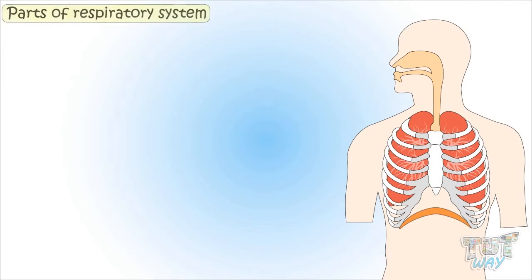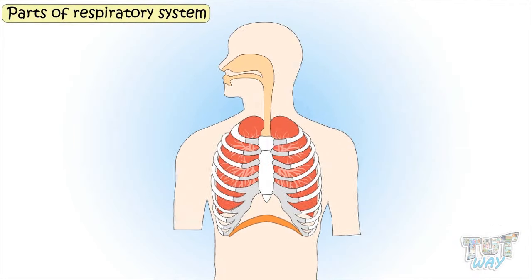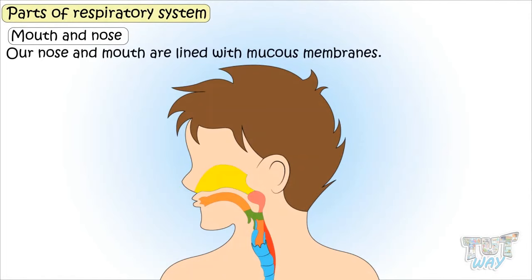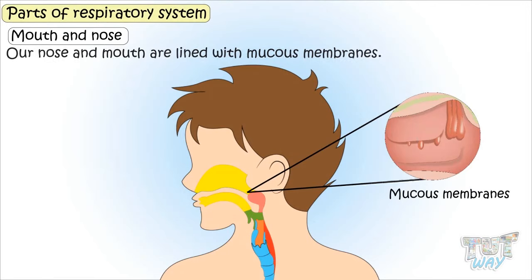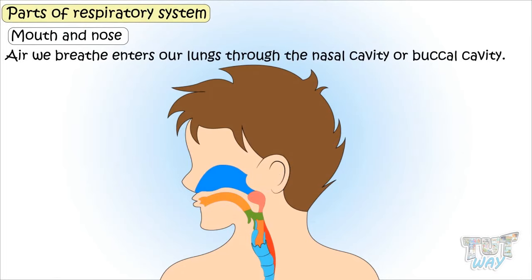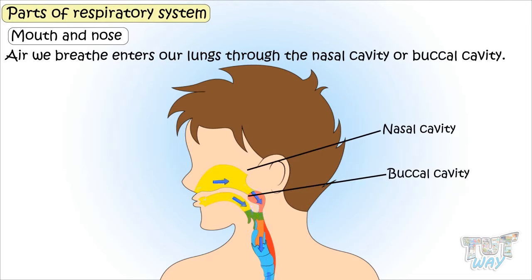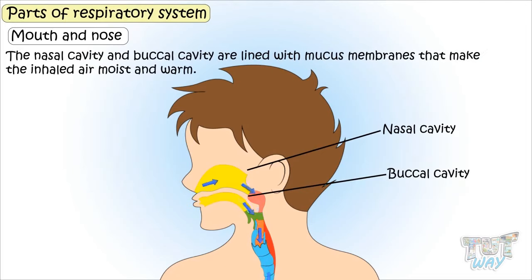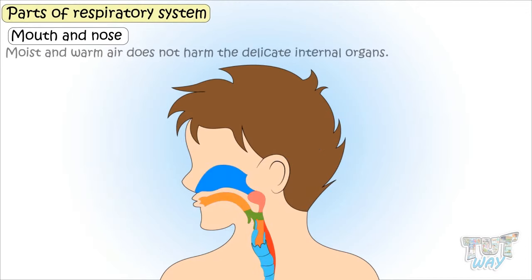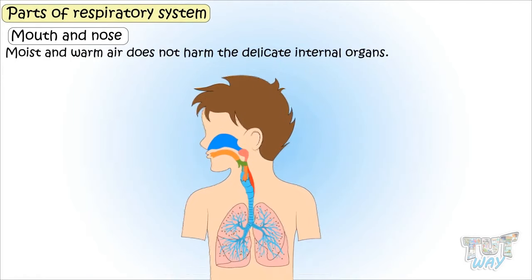Now let's learn the parts of the respiratory system. Mouth and nose: Through the mouth and nose, we take in air. Our nose and mouth are lined with mucous membranes that keep them moist. Air we breathe enters our lungs through the nasal cavity or buccal cavity, both of which are lined with mucous membranes that make the inhaled air moist and warm. Warm and moist air does not harm the delicate internal organs.